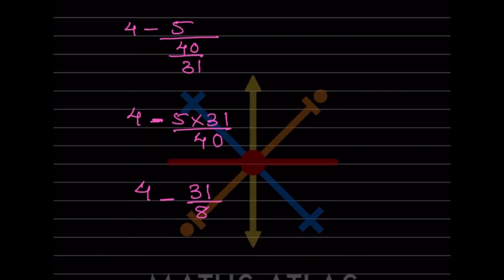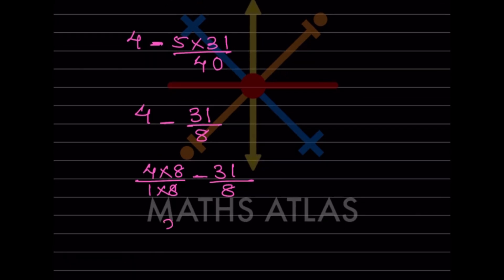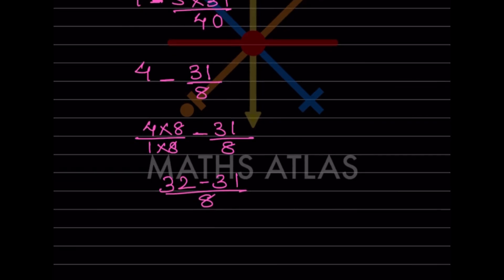We take the LCM which is 8, so we write 4 as 32/8, then 32/8 minus 31/8 = 1/8. So 1/8 is the answer. We are done with today's work. Do like and subscribe to my channel so you get notifications of other parts. Thank you.